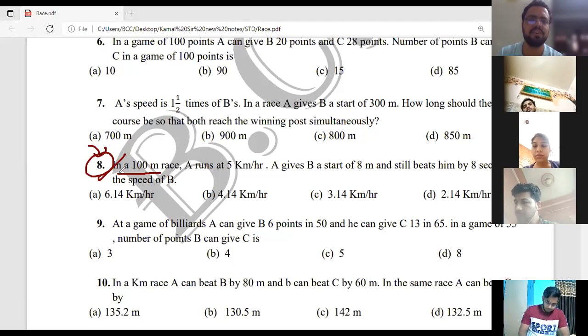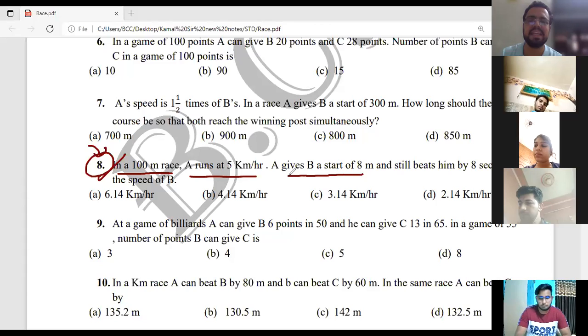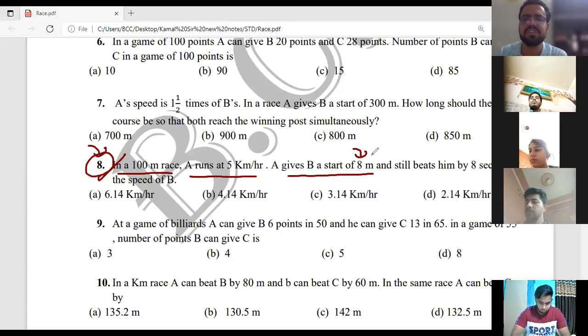The question is: In a race of 100 meters, A runs at 5 km per hour. A's speed is given as 5 km per hour. And A gives B a start of 8 meters. If it is 100 meters, A gives B an 8 meter start. Means B only has to run 92. And still beats him by 8 seconds. It means A wins by 8 seconds.